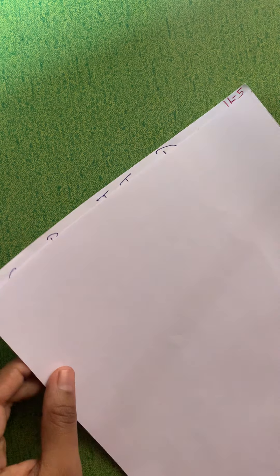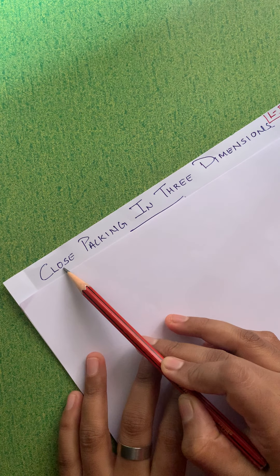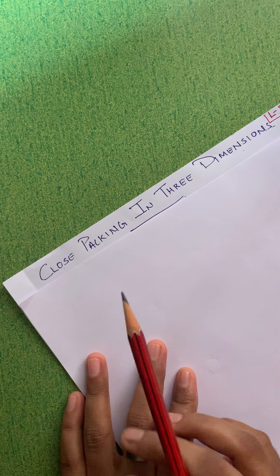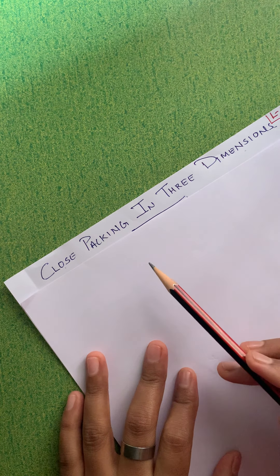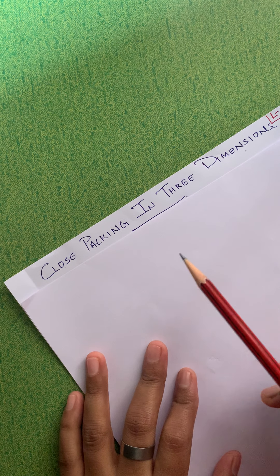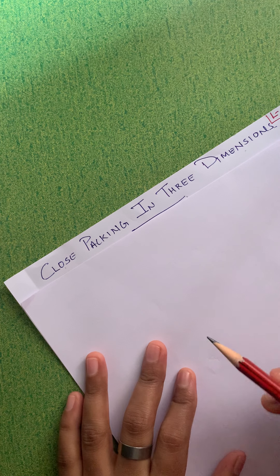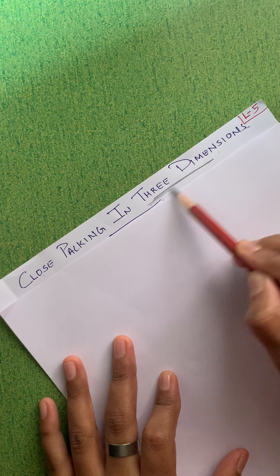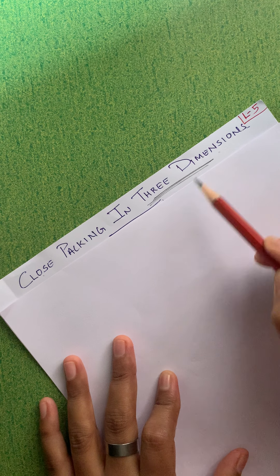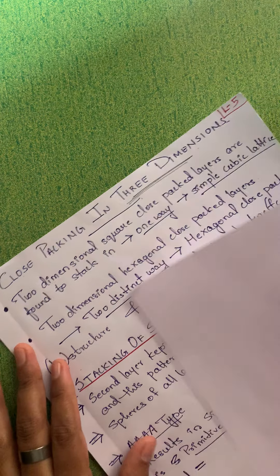Let's start with three-dimensional close-packed structures today. Close packing in three dimensions means we have the x, y, as well as z axis, so we have to imagine a little bit. When learning these 3D structures, please understand you have to use your imagination because on paper we cannot show a 3D structure.